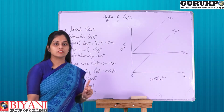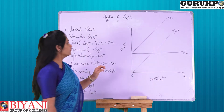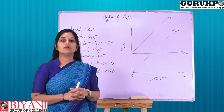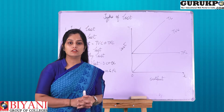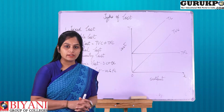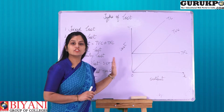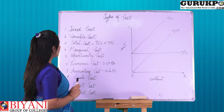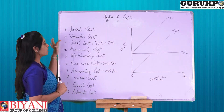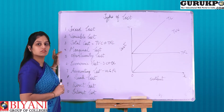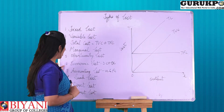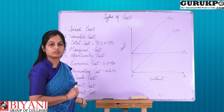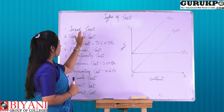Cost or profit will be determined in an organization. First of all, what is cost? Cost is the expenditure incurred while making a particular product. The various types of cost are: fixed cost, variable cost, total cost, marginal cost, opportunity cost, economic cost, accounting cost, sunk cost, direct cost, and indirect cost.